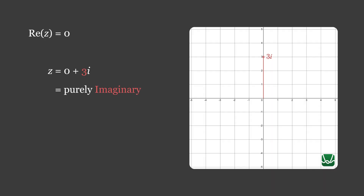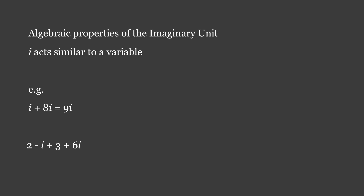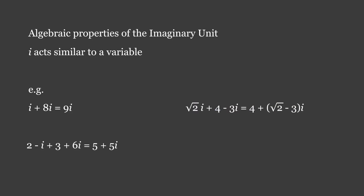Before we visualize the arithmetic of complex numbers on an Argand diagram, let's clarify the algebraic properties of the imaginary unit. When we use the imaginary unit in algebra, it acts similar to a variable. For example, i plus 8i equals 9i. For 2 minus i plus 3 plus 6i, we collect the real parts: 2 plus 3 equals 5, and then the imaginary parts: negative i plus 6i equals 5i, giving the solution 5 plus 5i. For root 2i plus 4 minus 3i, the only real part is 4, and we group the imaginary parts as factors of i to get a clean, conventional solution.